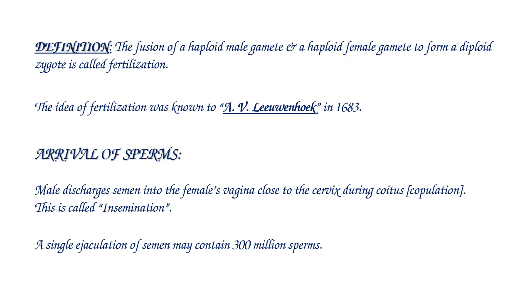Arrival of sperms into the female reproductive system is due to insemination. Insemination is when the male discharges semen into the female's vagina close to the cervix during coitus or copulation or sexual intercourse.